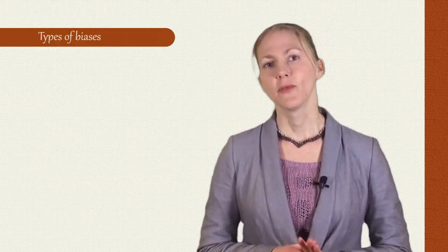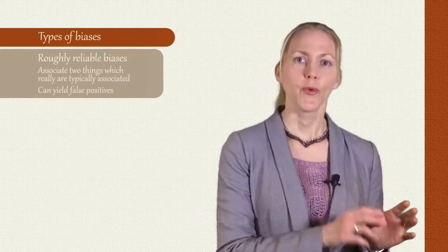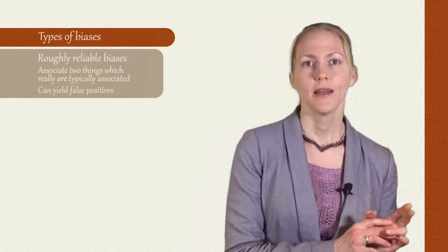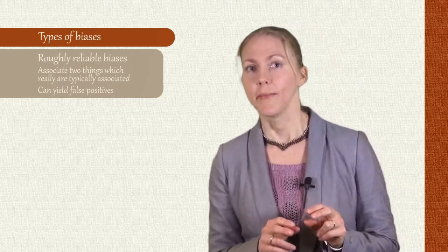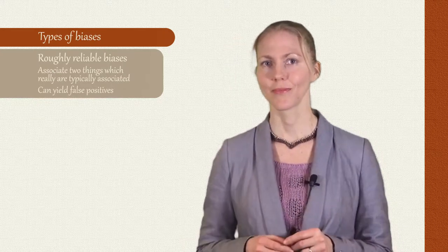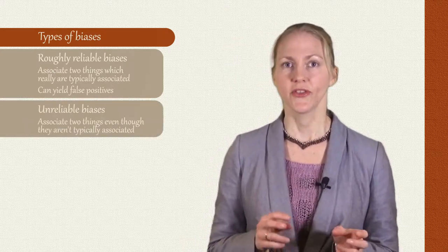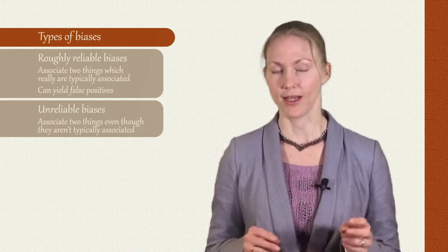So let me introduce some more terminology. When a bias associates two things that really are often associated, I'll call it a roughly reliable bias. Roughly, because it can sometimes tempt us to form false positive beliefs too. And when a bias associates two things that aren't often associated, I'll call it an unreliable bias.